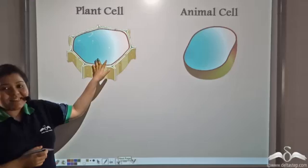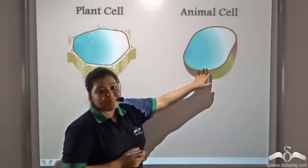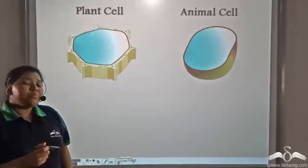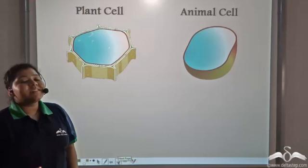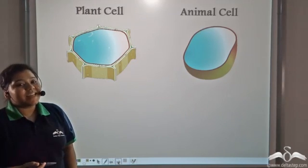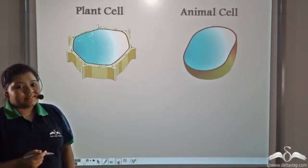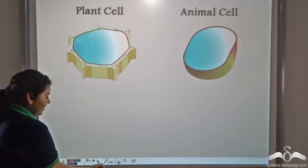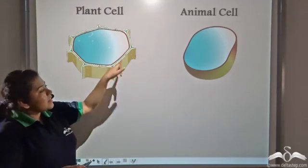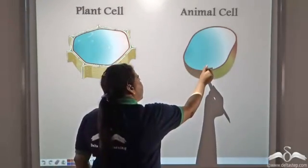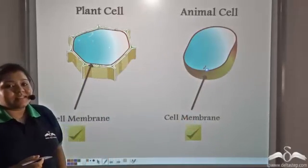This is a plant cell and this is an animal cell. Now, can you point out the structure that is common between the animal cell and the plant cell? Yes, this structure that you can see is common between both the plant cell and an animal cell. And this structure is the cell membrane.